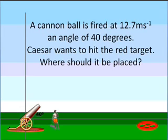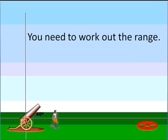This problem is generally worth excellence if you can get to the end. However, there are plenty of achieved and merit opportunities on the way. What you need to do is work out the range. The range is the horizontal distance, which will give us an idea of where we had to put the target and what if Caesar had hit it.